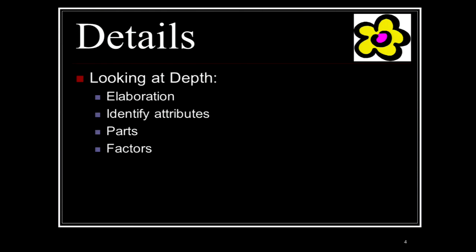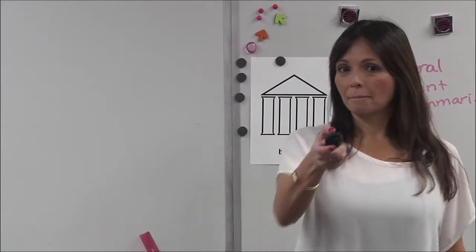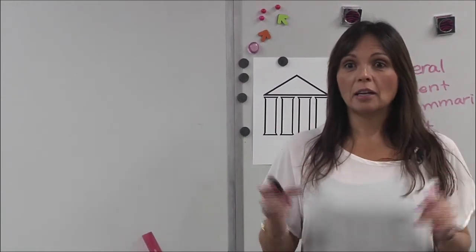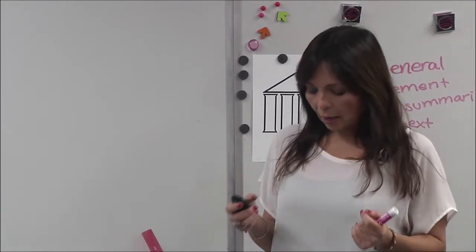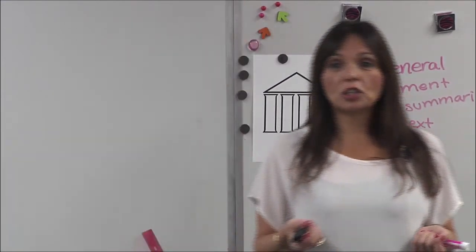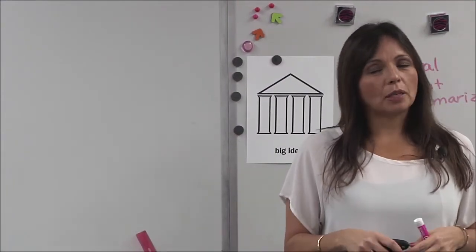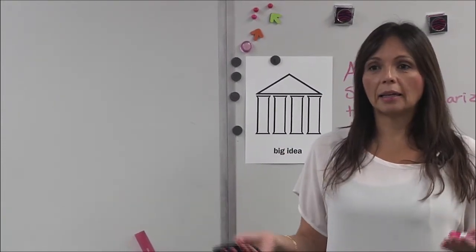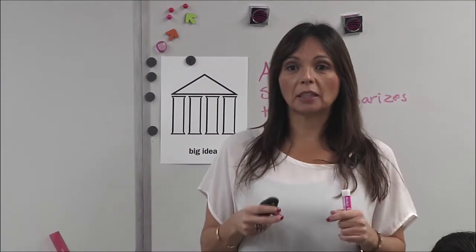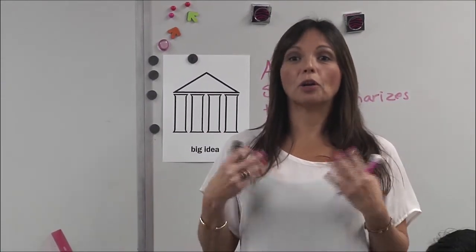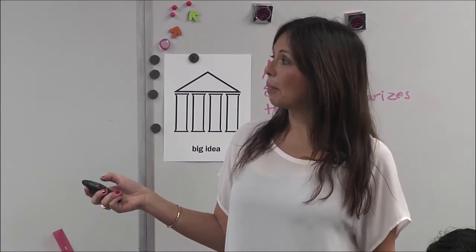So who can tell me what elaboration means? The detail in the sentence — right, the details. So if I tell you Mrs. C is standing here wearing a white shirt, and then you'd elaborate on it, you would say Mrs. C is wearing a white shirt with black leggings and boots and has a gold bracelet. I've now elaborated and brought the details so that if you close your eyes you actually know what's happening. So that's elaboration.